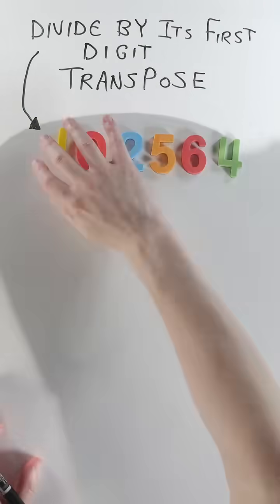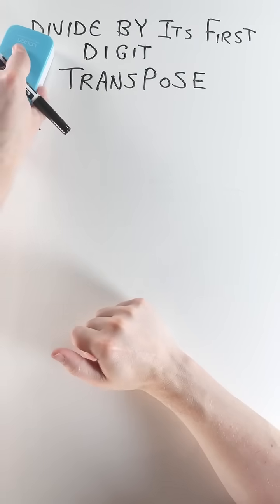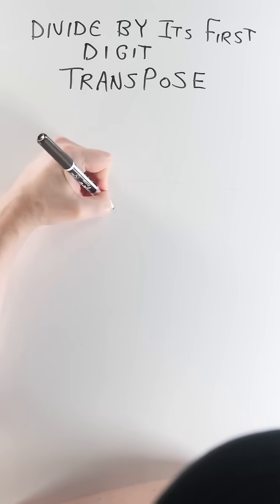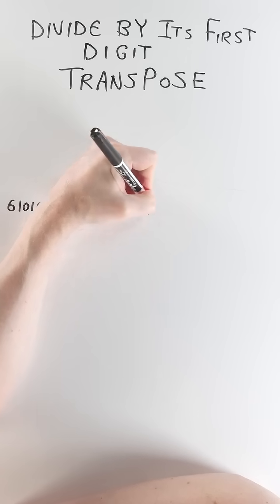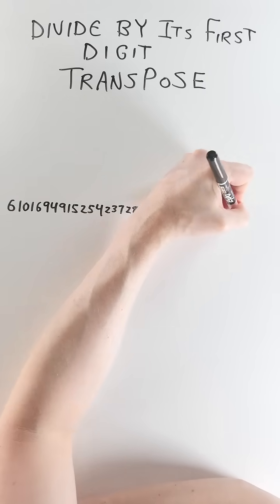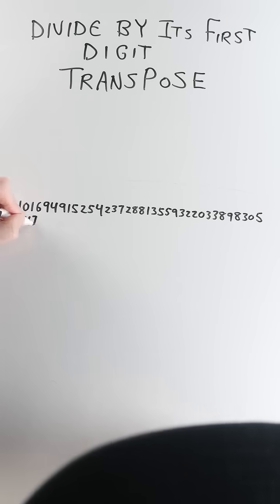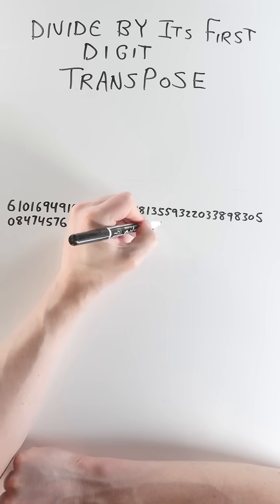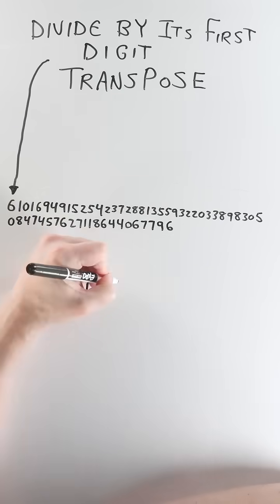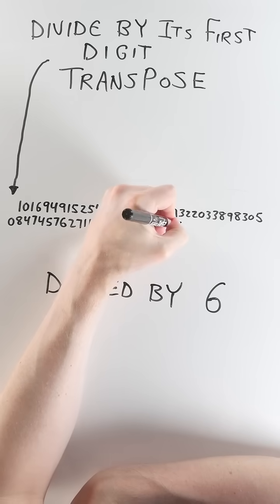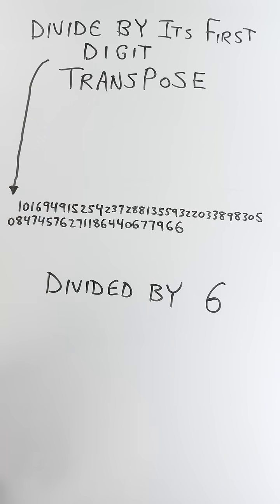Pretty cool, but not cool enough. How about a 58 digit number like 6101-6949-1525-4237-2881-3559-3220-3389-8305-0847-4576-2711-8644-067796. Divided by 6, it works the same way. Throw the 6 at the end, move all 58 digits to the left and you get the correct answer.